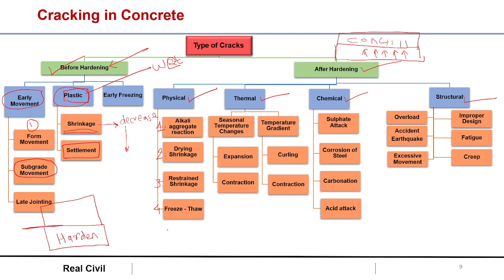Fourth is freeze-thaw, where water in the cracks or pores freezes and then melts. In that action there is a volume change of nine percent from water to ice, and because of that there may be freeze-thaw cracks. In thermal causes, there are seasonal temperature changes and temperature gradients — when temperature is higher the concrete expands, when lower it contracts, causing thermal cracks.